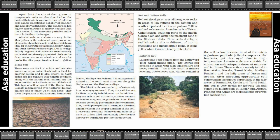Alluvial soils are very fertile. These soils contain adequate proportions of potash, phosphoric acid and lime, which are ideal for the growth of sugarcane, wheat and other cereals and pulse crops.